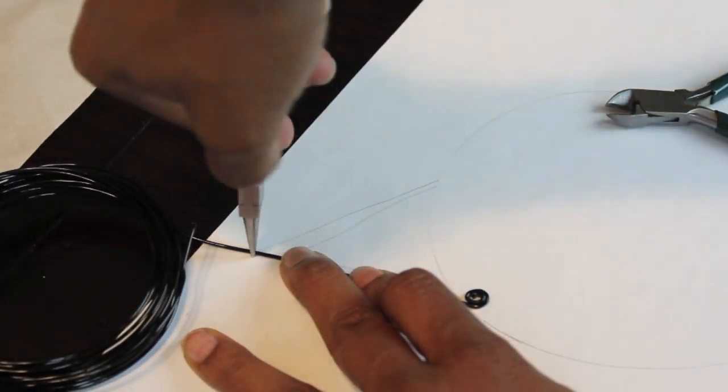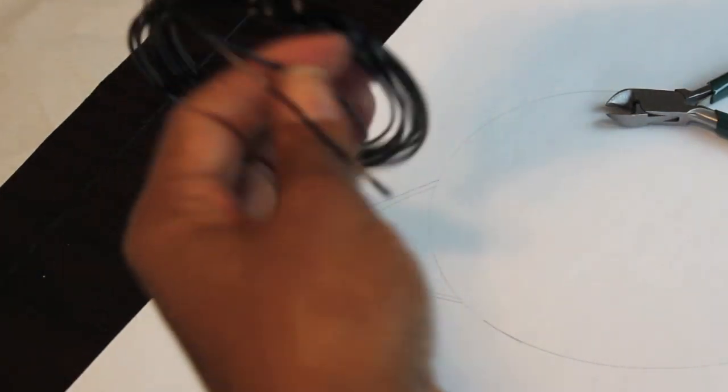Next you're going to put the twist at the base of the headband that you drew and find your point.